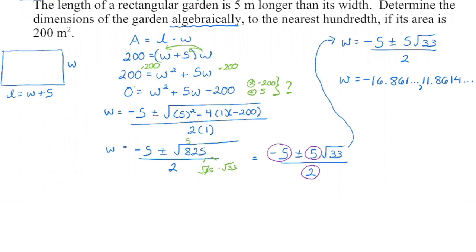I already have the terms lined up, so I'm going to put in negative b plus or minus the square root of b squared minus four times a times c, all divided by two times a. My a value is one, my b value is five, and my c value is negative 200. When I go to simplify, I start with the radicand — I enter this into my calculator and end up with 825. Then multiply the denominator: 2 times 1 is 2. We're going to look for a perfect square we can factor out of 825 — that 25 should give you a clue. We check 25 and it's divisible by 25, leaving 33.